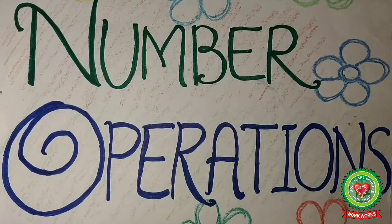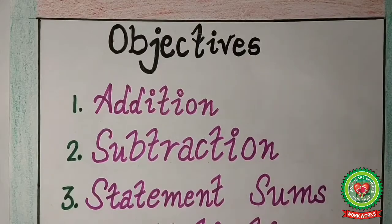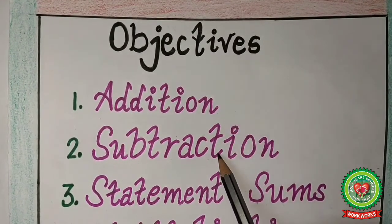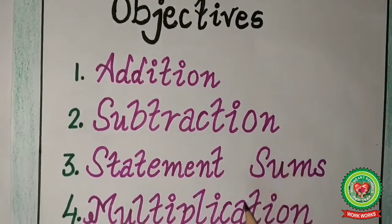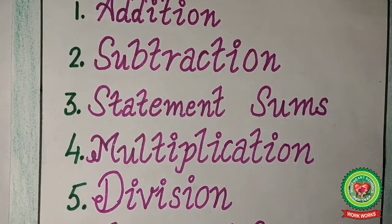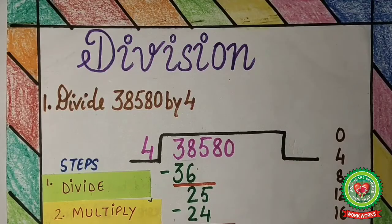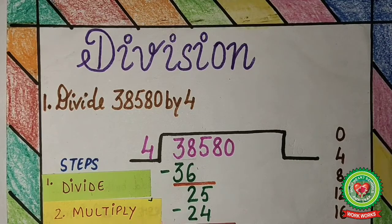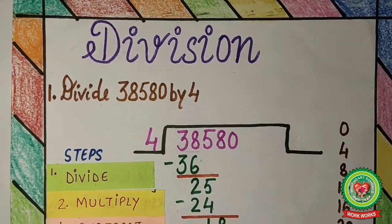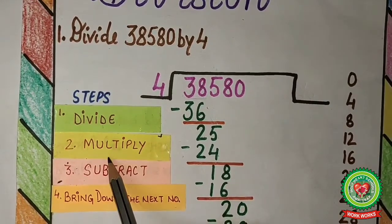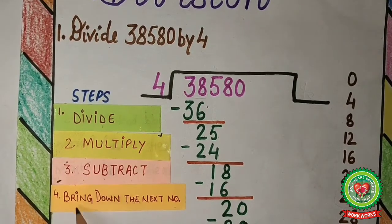Hello students, welcome to math class. In the chapter 'Number and Operations', we have already done addition, subtraction, statement sums of addition and subtraction, and multiplication. Today's topic is division. Let's start with single digit division. Before we start, let's recall the steps of division: step 1 is divide, step 2 is multiply, step 3 is subtract, step 4 is bring down the next number.